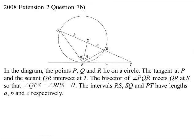2008 paper. Interesting diagram. So P, Q, and R are all on the circle. And we've got a secant QR, which produced through intersects the tangent at T. Bisector PQR. So they've labelled them both theta. So highlight it's a bisector. Now, what have we got to do? First step.